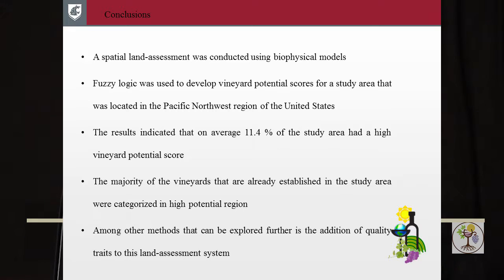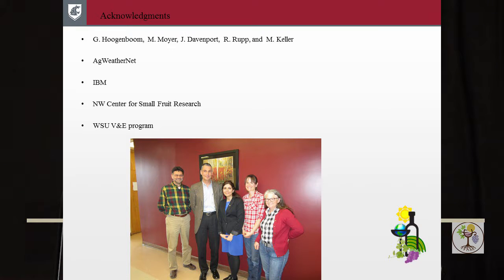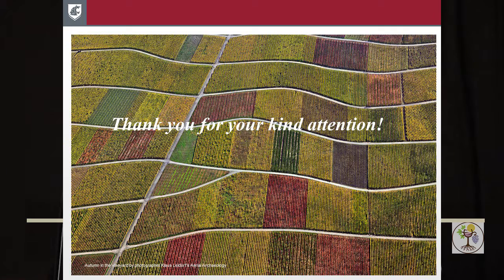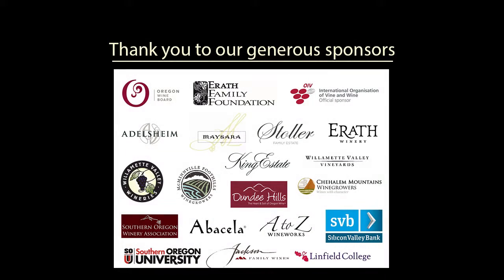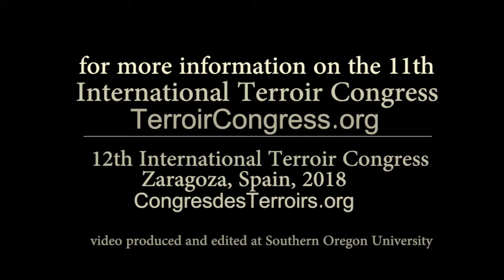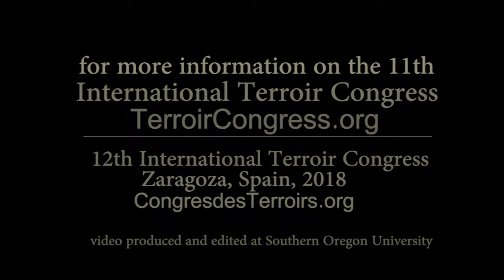Overall, we were able to develop this land assessment system, and we were able to successfully apply fuzzy logic for that. Among the already established vineyards in the state of Washington, more than 97% of them were located in the high potential region, and on average 11.4% of the study area was located in the high potential region. We believe that for future studies, it might be good to couple the quality traits of different grapes in different areas and see how the model represents that region. I want to thank whoever helped me during this project and also the funding sources for my research. Thank you all for your kind attention.